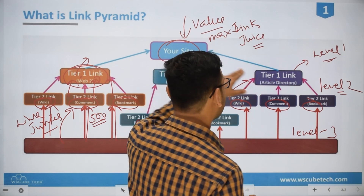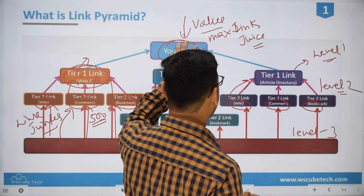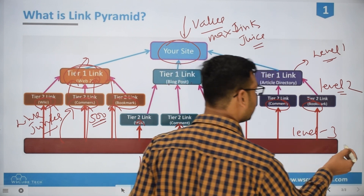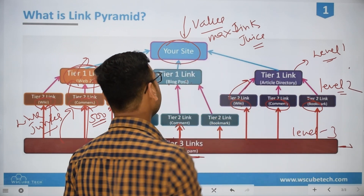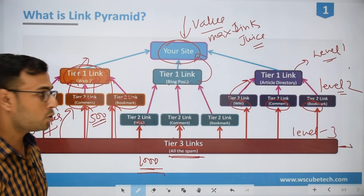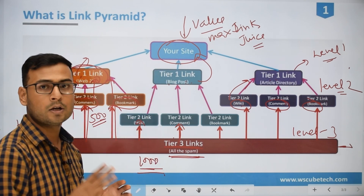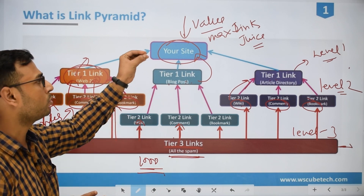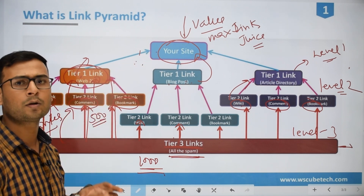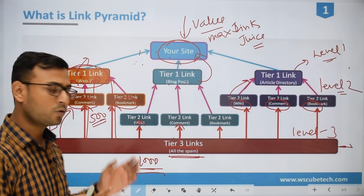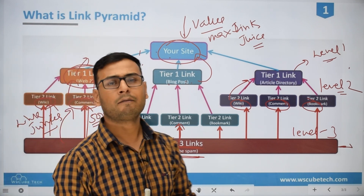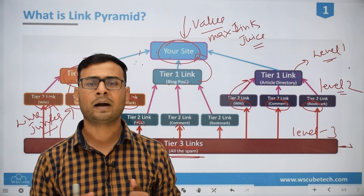If we connect this tier 1 content through a link to our website, then our website will be valued. Slowly and steadily, we are actually transferring our link power — link juice — from level 3 to level 2 to level 1, and then from tier 1 we are linking our website with this particular content. We are not directly linking our website with tier 3 links so that our website does not get penalized or look like spam. We connect our website from the tier 1 link so that the maximum authority gets transferred to our website. This is how the link pyramid works.